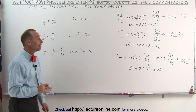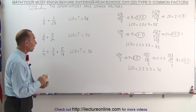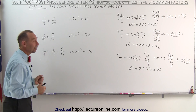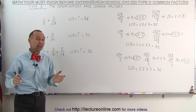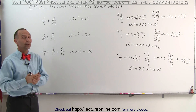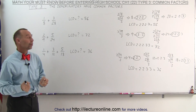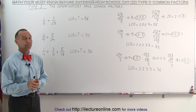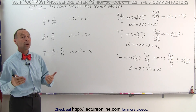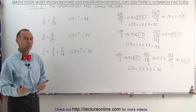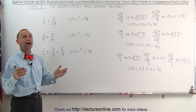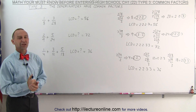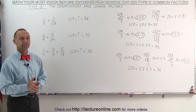That's the easy technique to find the lowest common denominator whenever you get a set of fractions and are asked to add them together — the first step you always need to do is find the lowest common denominator. Now that we know how to do that, we're going to show you some examples of how to actually add the fractions together. And that's how it's done.